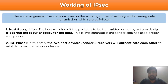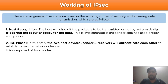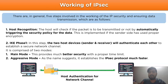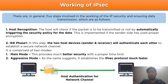The second step is known as IKE Phase 1. In this step, the two host devices — the sender and the receiver — authenticate each other to establish a secure network channel. It is comprised of two modes: the Main mode, which provides much better security with a proper time limit, and the Aggressive mode, which, as the name suggests, establishes the IPSec protocol much faster in comparison to Main mode.